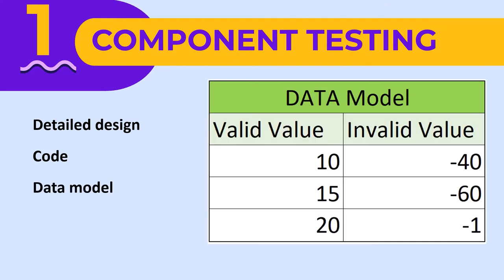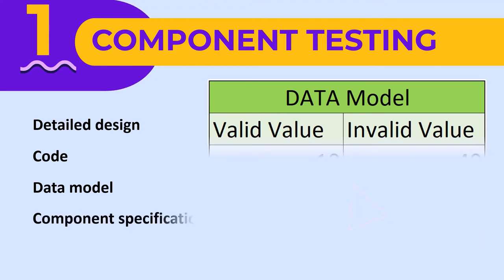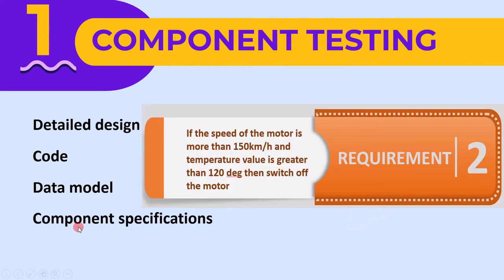The third requirement is the data model. In component testing, we validate the component of software by providing different data — like valid and invalid data — to validate if the component behaves as expected. The data model can help in selecting the input data and validating it against the expected output. The fourth requirement is the component specification, which refers to specific documents that lay out how the component is implemented and its purpose.